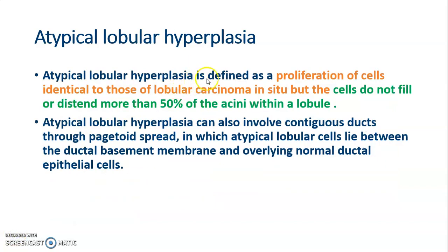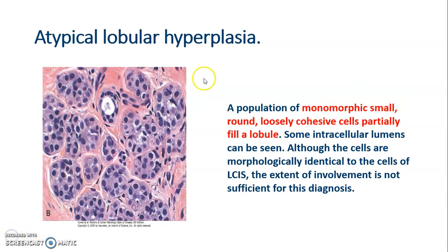Atypical lobular hyperplasia is defined as a proliferation of cells identical to those of lobular carcinoma in situ, but the cells do not fill or extend more than 50% of the acini within a lobule. The microphotograph shows monomorphic small round loosely cohesive cells partially filling the lobule.